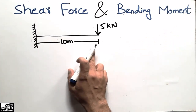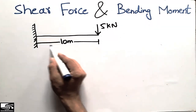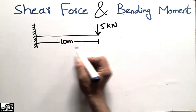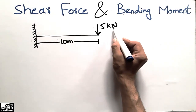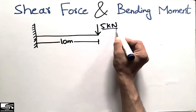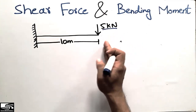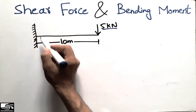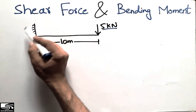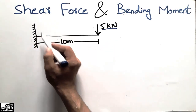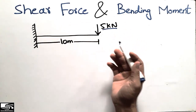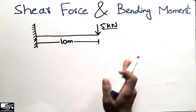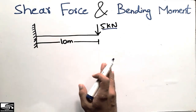This cantilever beam has a length of 10 meters, and a 5 kilonewton concentrated load is acting on the right end. It has a fixed support — you can see in the cantilever there is a fixed support at the left end. We are going to find the support reaction, shear force, and bending moment diagram of this problem in detail.